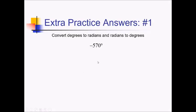On this problem, we're converting from degrees to radians. We have to multiply by pi over 180 degrees, so that'll make the degrees cancel out. Then we just have to reduce 570 over 180. These are both divisible by 30. 570 is almost 600, which would be 20 if you divided it by 30, so that's going to be 19. We'll have 19 over 6, so negative 19 pi over 6 when all is said and done.